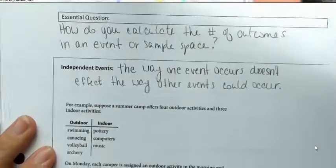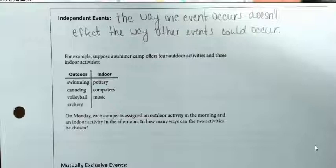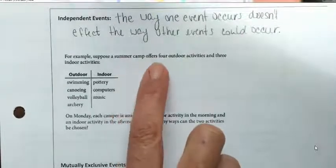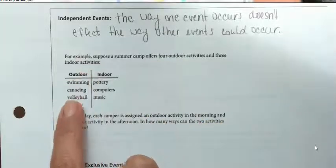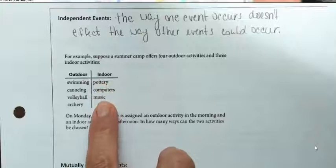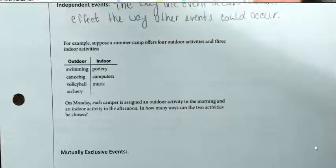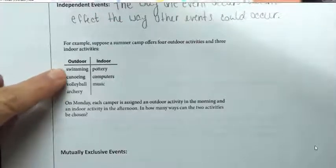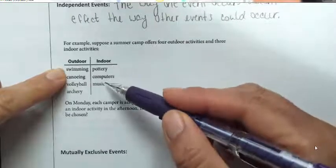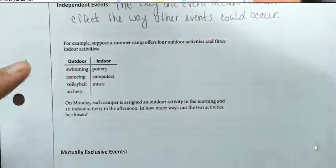We're going to use an example for several problems. Suppose there's a summer camp that offers four outdoor activities and three indoor activities. On Monday, each camper is assigned an outdoor activity in the morning and an indoor activity in the afternoon. In how many ways can the two activities be chosen? This is an example of independent events — just because I get swimming in the morning, that has no effect on what I'll get in the afternoon.